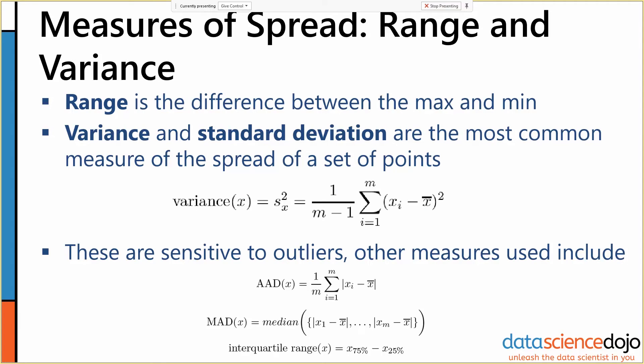The last summary statistics that we tend to care about are measures of spread: range and variance. Variance or standard deviation are the most common measures of the spread of a set of points. It tells us how different the points are. Variance and standard deviation are effectively measures of the spread of our data very directly.